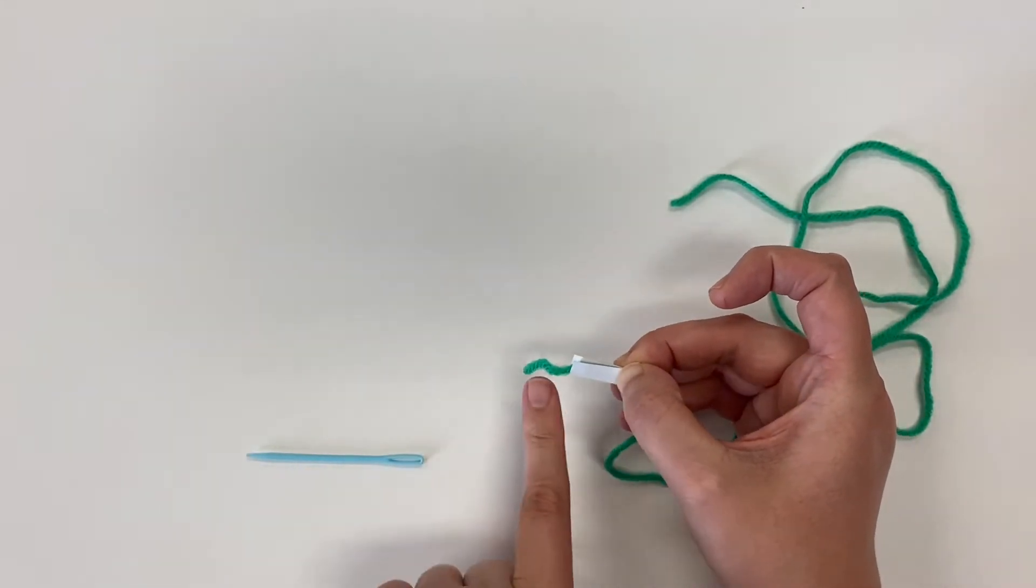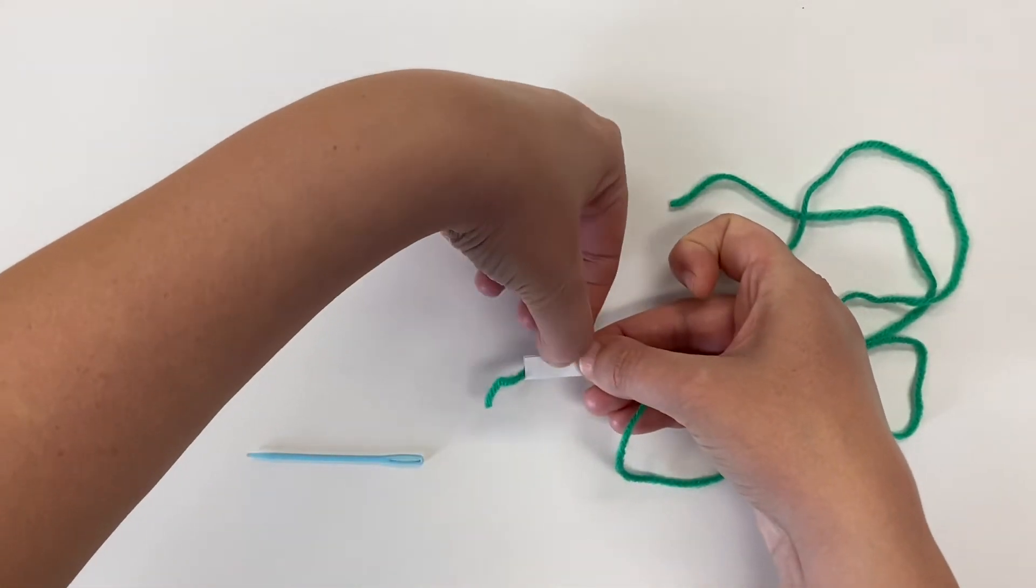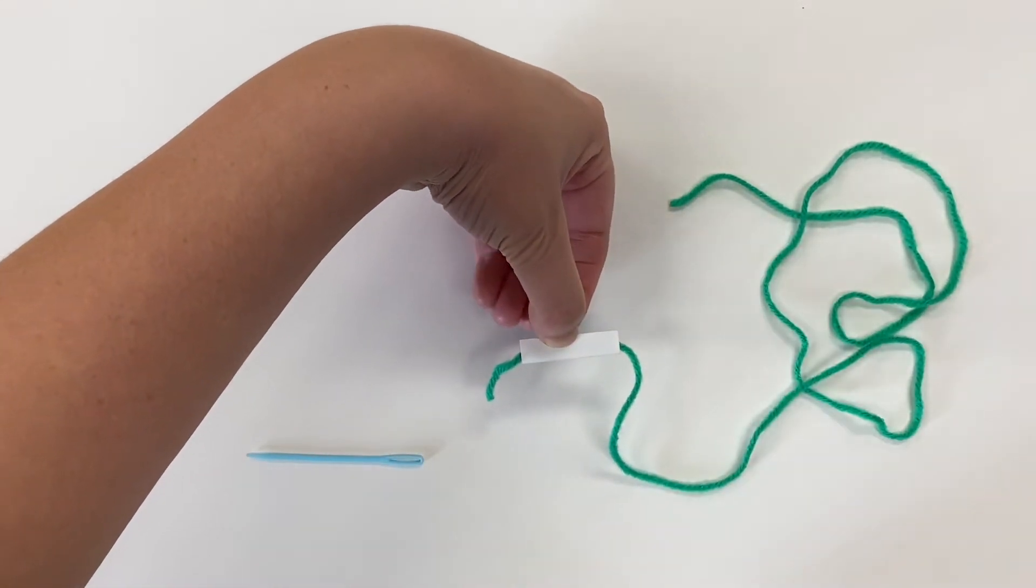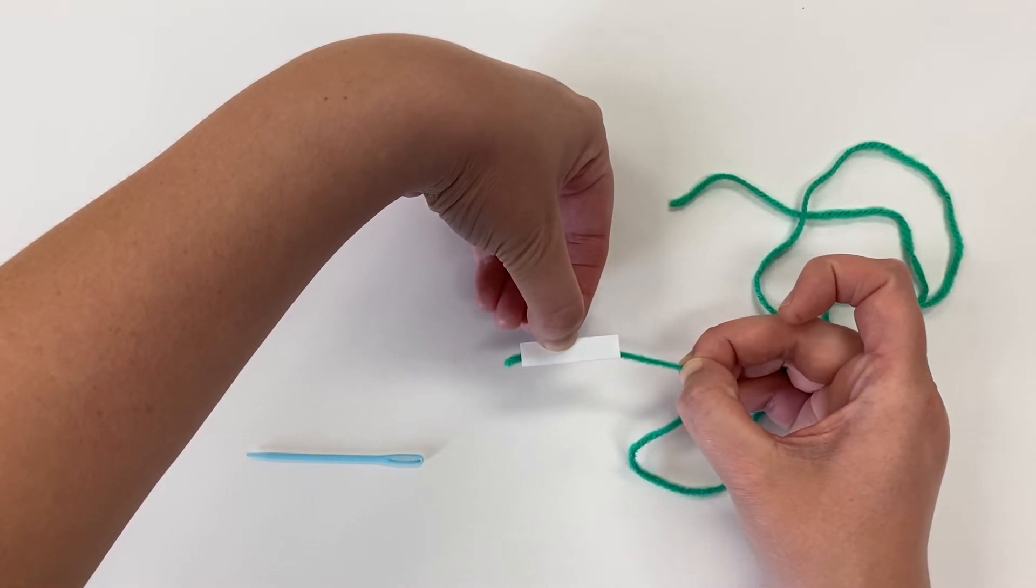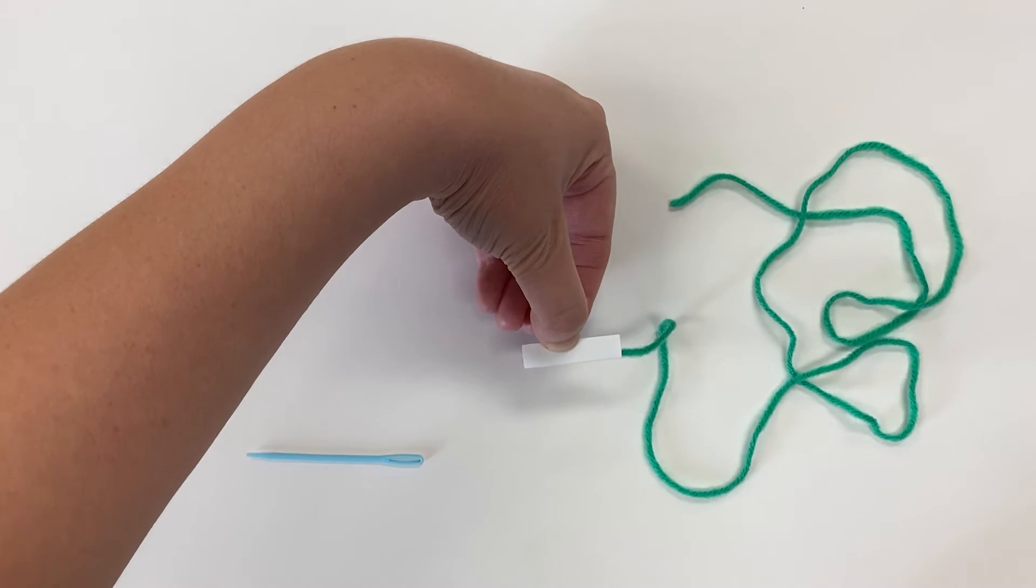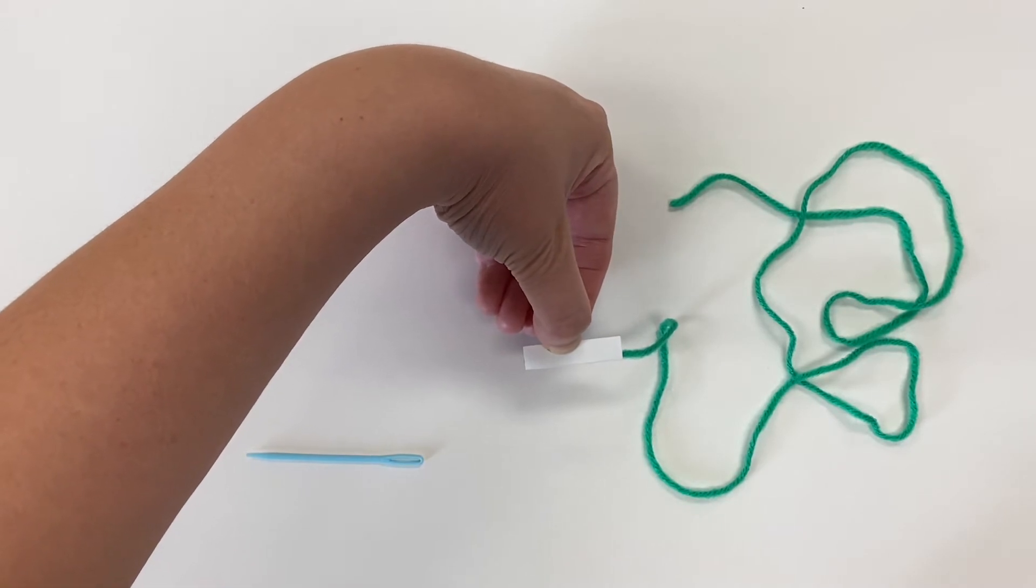what you can do is just very gently pinch the top of the hot dog bun and then very gently pull that yarn until it's all the way inside the hot dog bun.